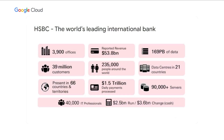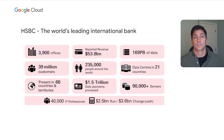Before we start with our questions, why don't you tell us a little bit about the scale of HSBC? We are one of the world's largest global banks. We're in 66 countries, process about $1.5 trillion a day in payments, and have roughly 110,000 servers globally right now. We have data centers in 21 different countries, around 235,000 employees, 39 million customers globally, revenue of $53.8 billion a year, roughly 3,900 offices worldwide, and 40,000 IT professionals.